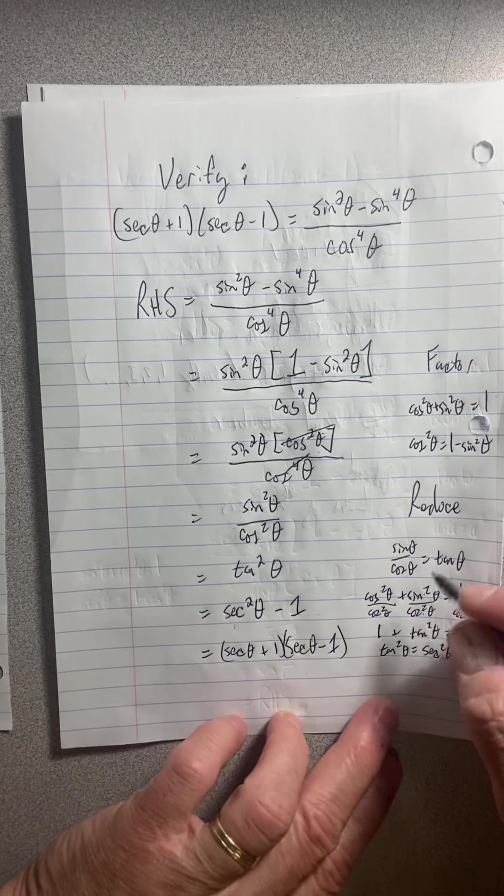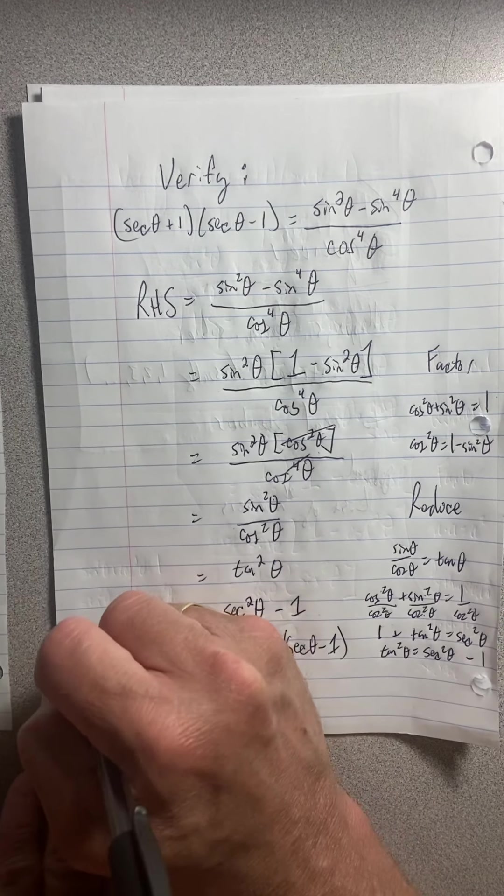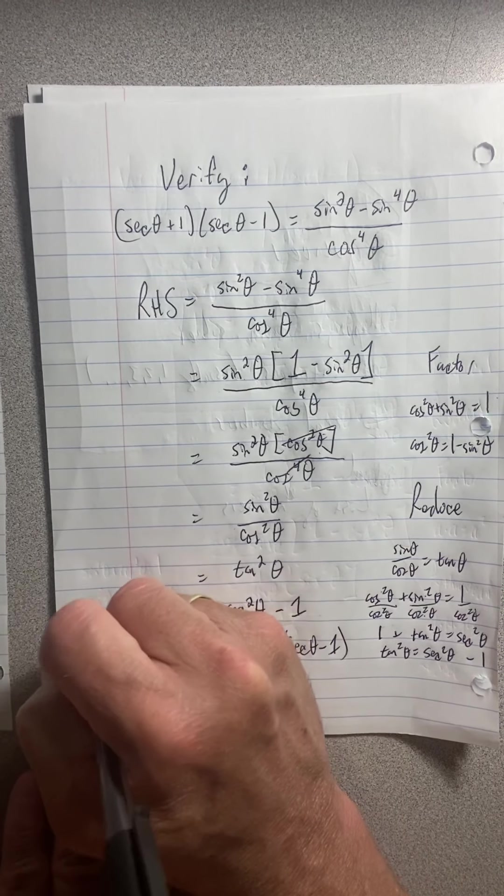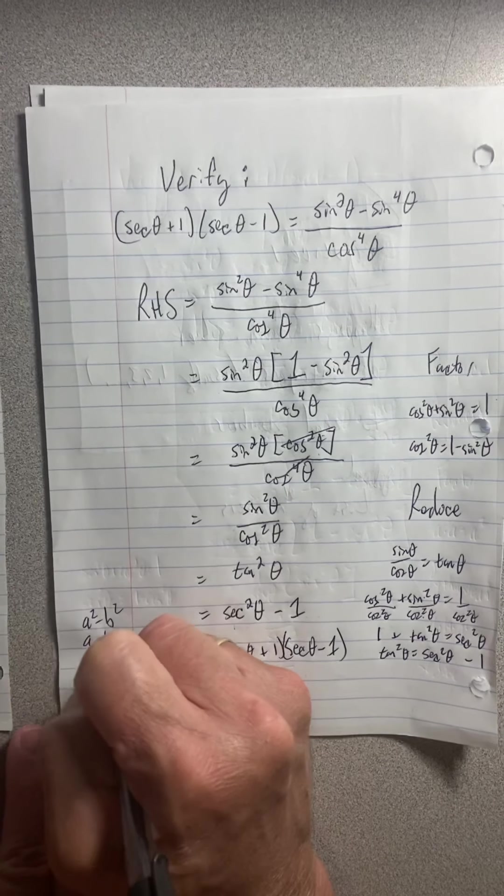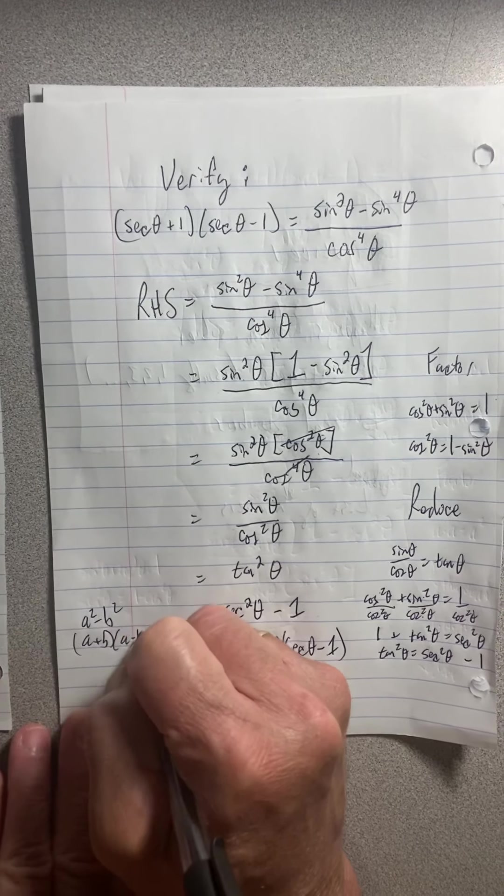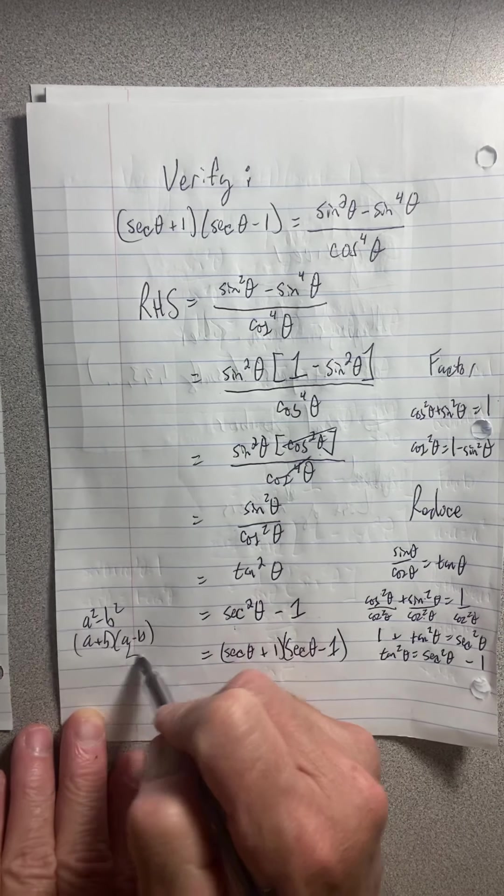I used up too much space up here. I'll put my justification over here because I'm running out of room. That was using the difference of squares rule that a squared minus b squared is equal to a plus b times a minus b. That's the justification for that step there.